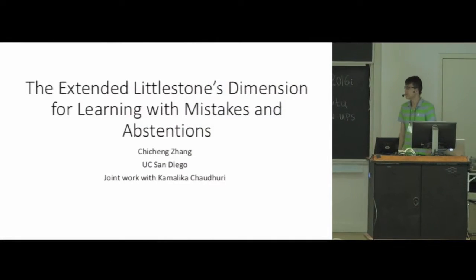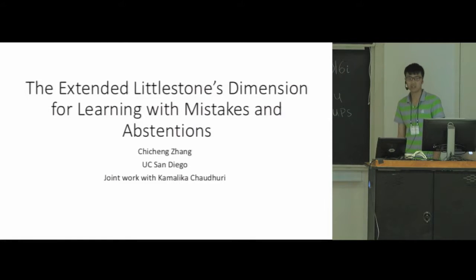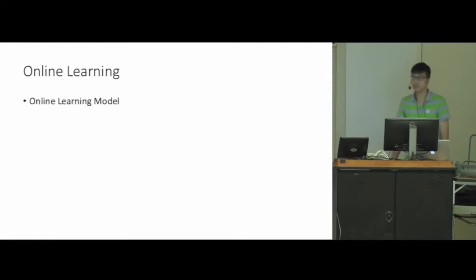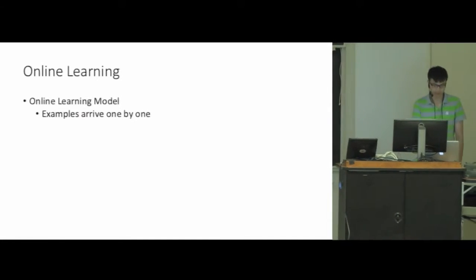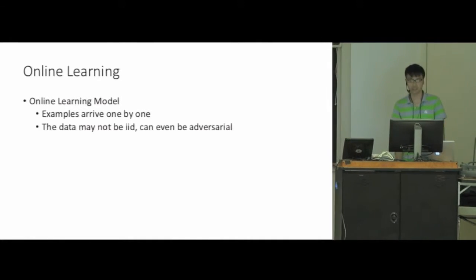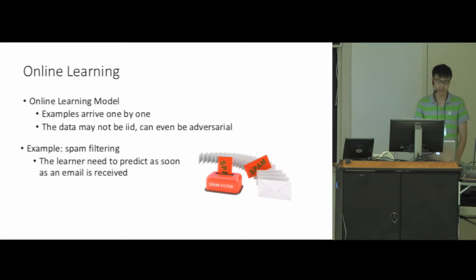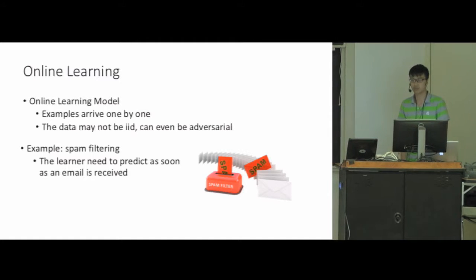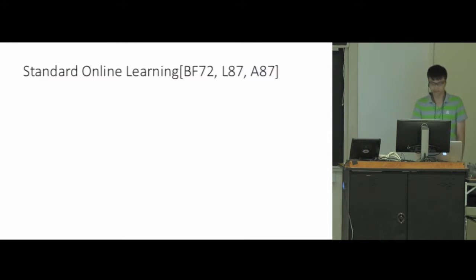Hi everyone, I'm Shisheng and this is joint work with my advisor Kamalika Chaudhuri. I'm going to talk about the Extended Littlestone's Dimension for learning with mistaken abstentions. Here's the traditional online learning model where in each round examples arrive one by one, the data may not be IID and may be adversarial. For example, for spam filtering, emails come one by one and the learner needs to predict as soon as an example arrives, and the spammer may adapt to the changing strategy.